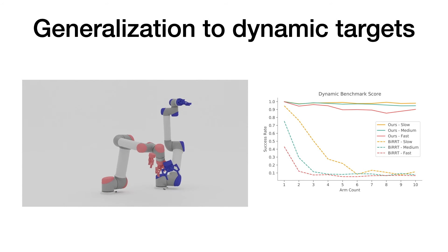Our policy can also directly generalize to dynamic tasks, while being trained on only static tasks, thanks to its closed-loop formulation. Meanwhile, as the configuration space grows, BIRT fails to plan efficiently to reach dynamic targets.